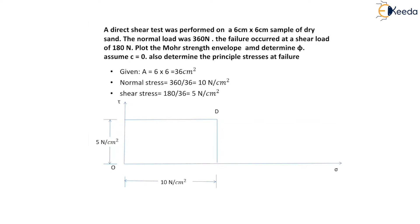Since the value of C is equal to 0, the Mohr envelope passes through the origin. By joining point O and point D, we obtain the Mohr envelope. Since point D represents failure, the Mohr circle passes through this point.